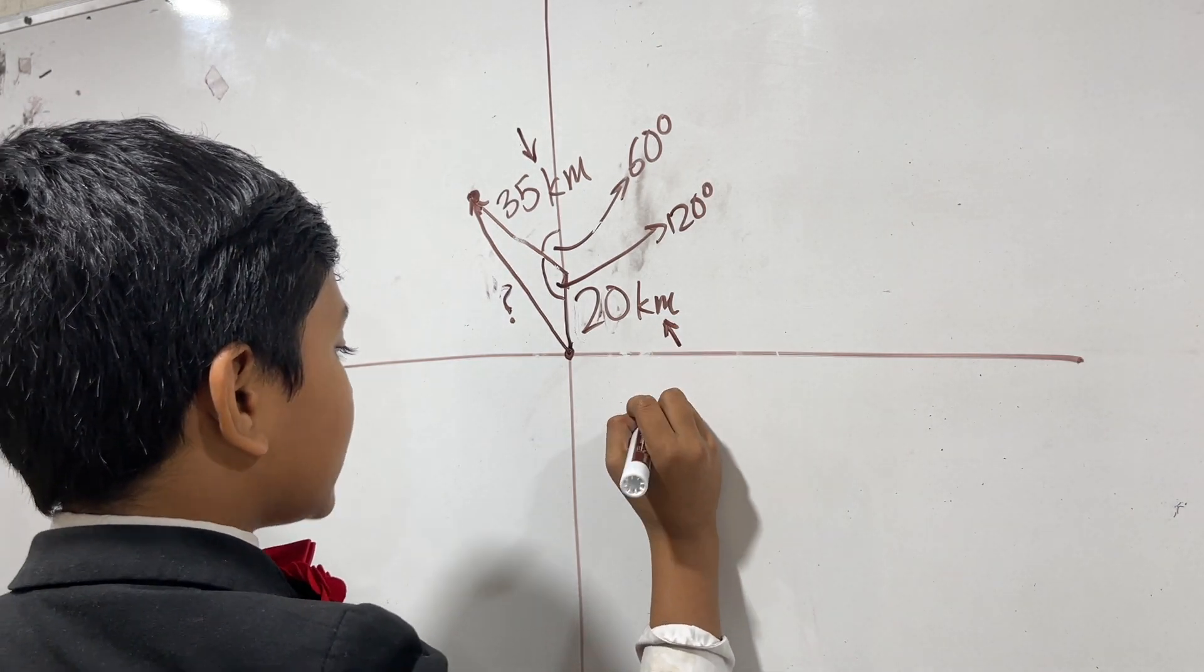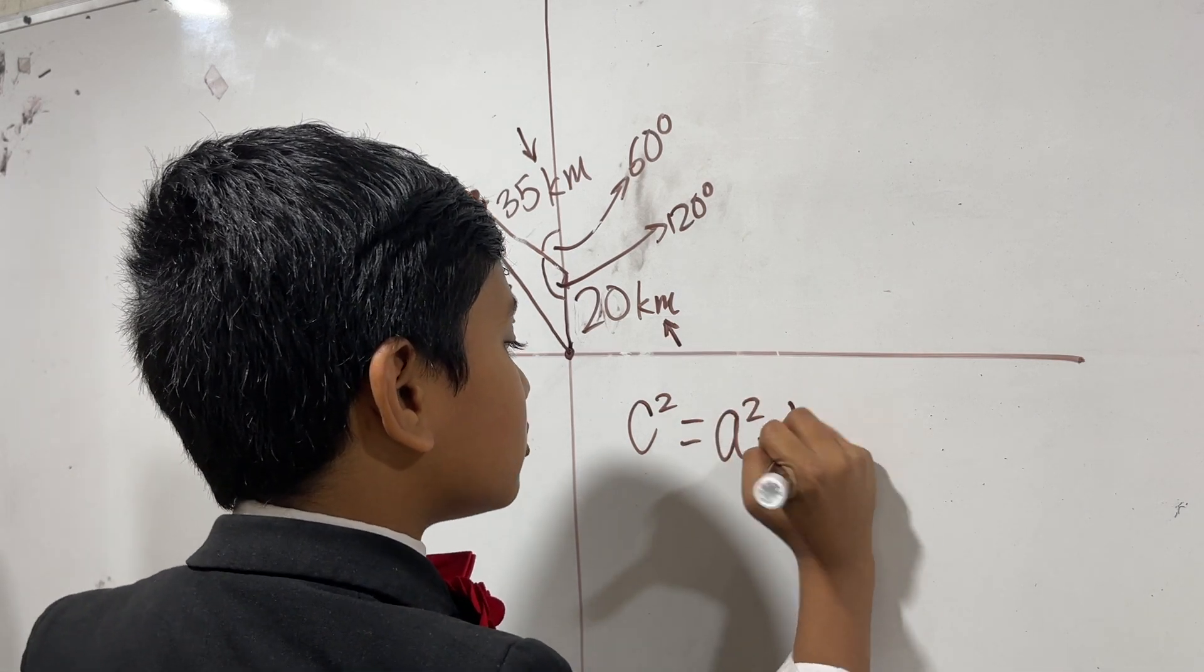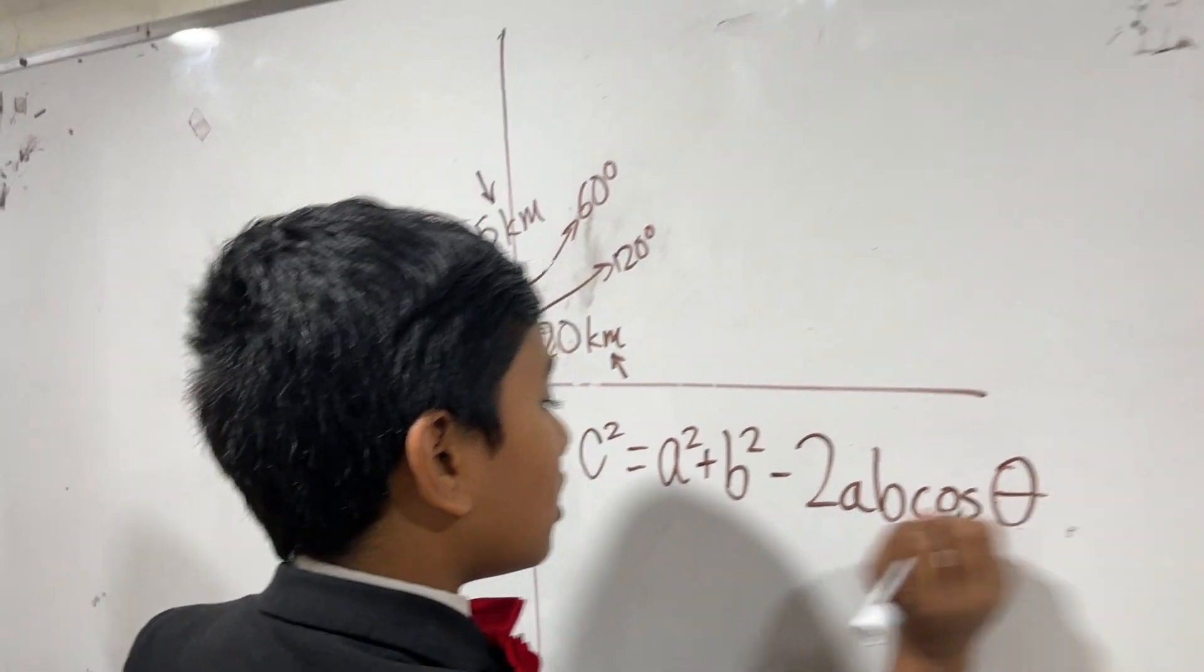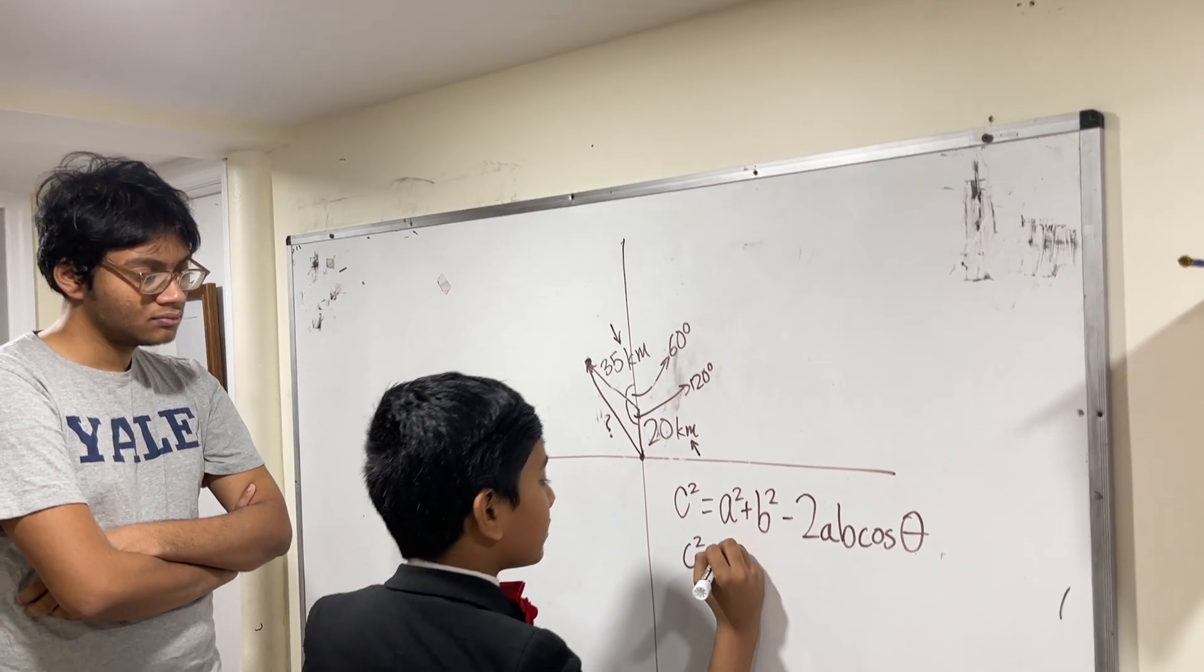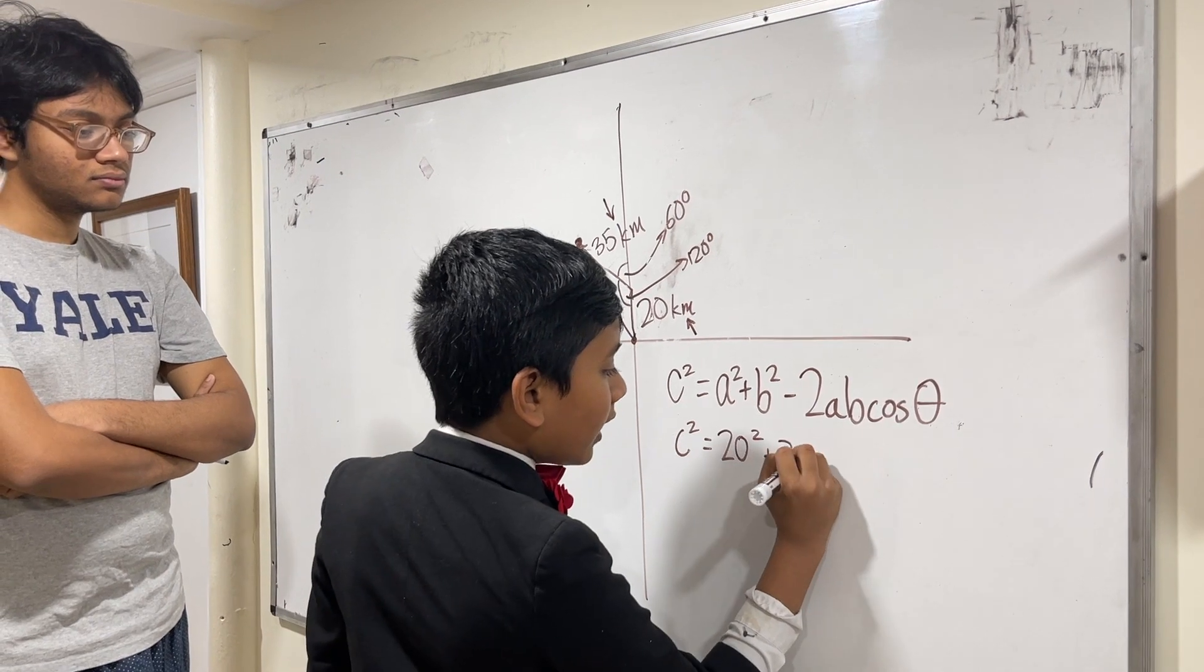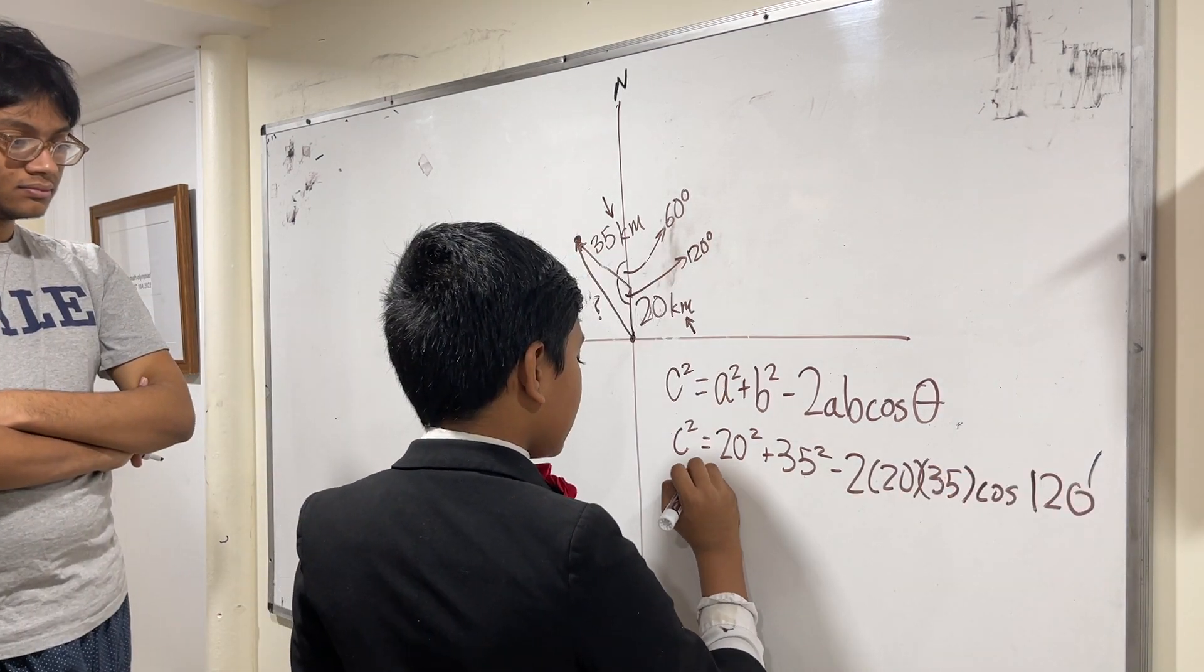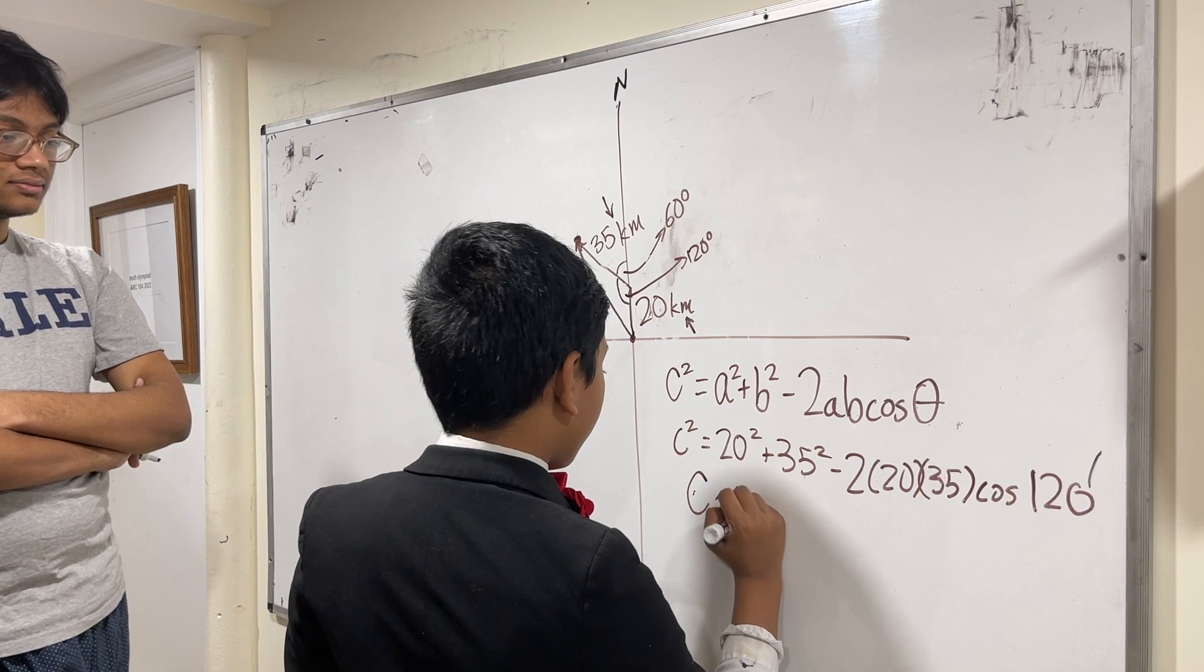So the law of cosine states that c squared is equal to a squared plus b squared minus 2ab cosine theta. So c squared over here, a squared would be 20, b squared would be 35, minus 2 times 20 times 35. Taking the square root of all of this, you get c is equal to approximately 48.